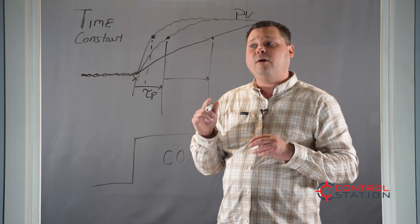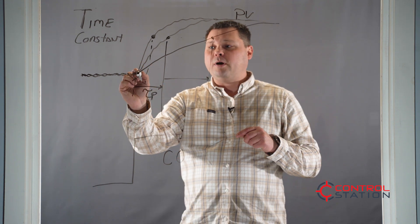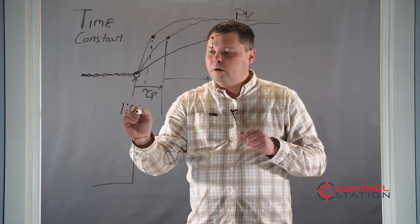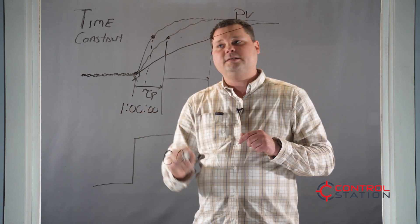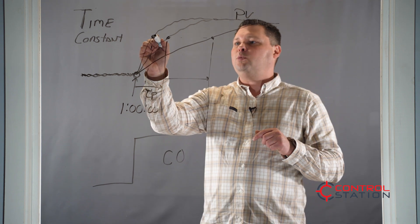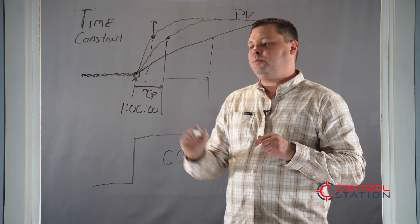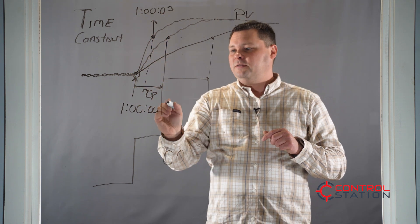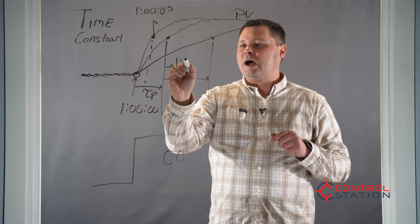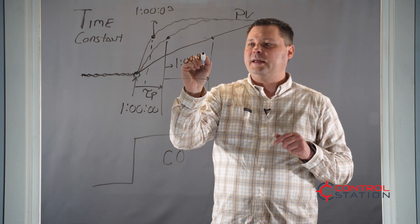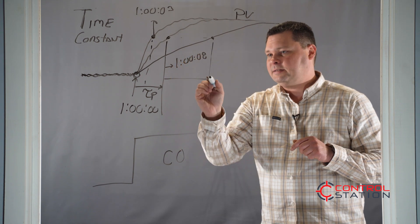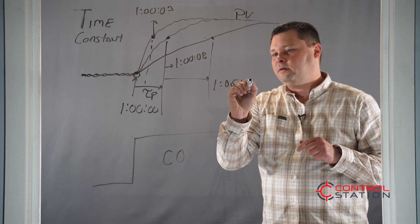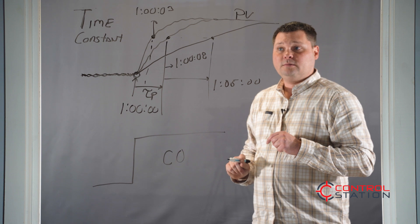So the time constant is the how fast. And so if my process started to respond at, let's make the numbers easy, one o'clock and zero seconds, and let's say this one here reached 63% of the way there at one o'clock and three seconds. This one was one o'clock and eight seconds, and this one's a little bit slower at 1:05 and zero seconds.